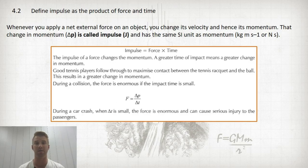An example of this analogy is tennis. Good tennis players follow through to maximize contact between the tennis racket and the ball. This results in a greater change in momentum.